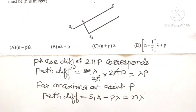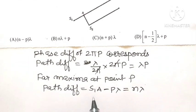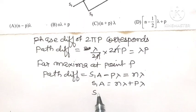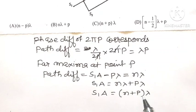This path difference must be an integral multiple of wavelength λ. So S1A equals nλ plus pλ, or S1A equals (n + p)λ.